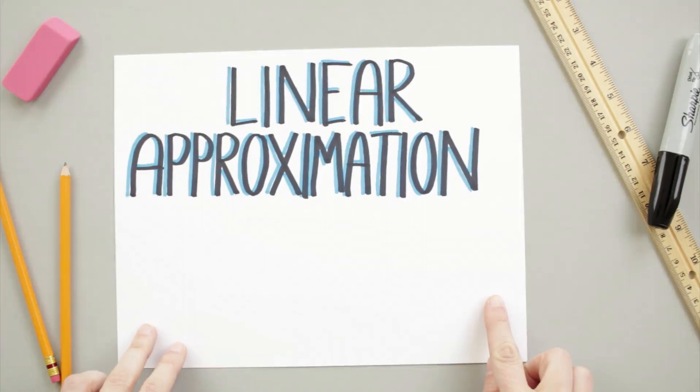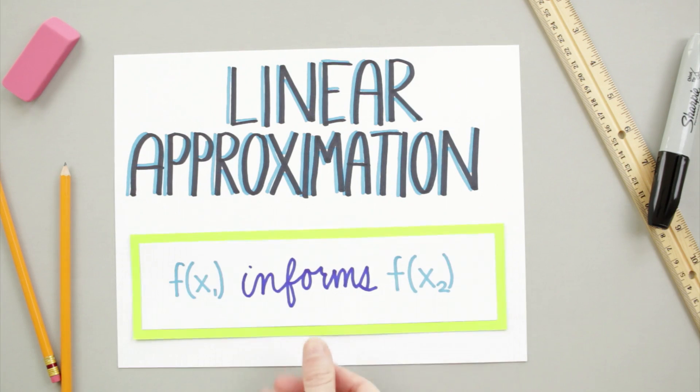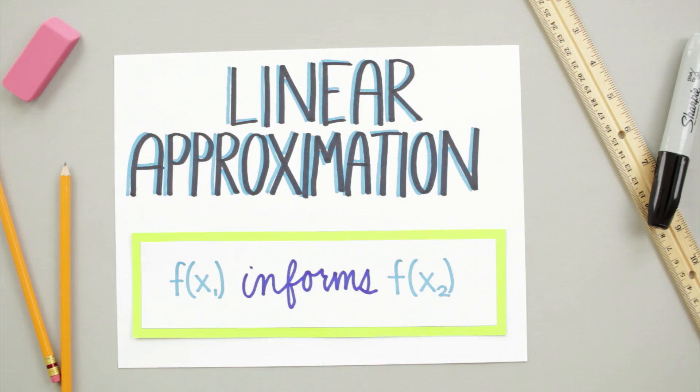Linear approximation, sometimes called linearization, is a process that we can use to find a really good estimate about the value of a function at a certain point that we don't know, by using some information that we have about the value of a function at a point that we already know.